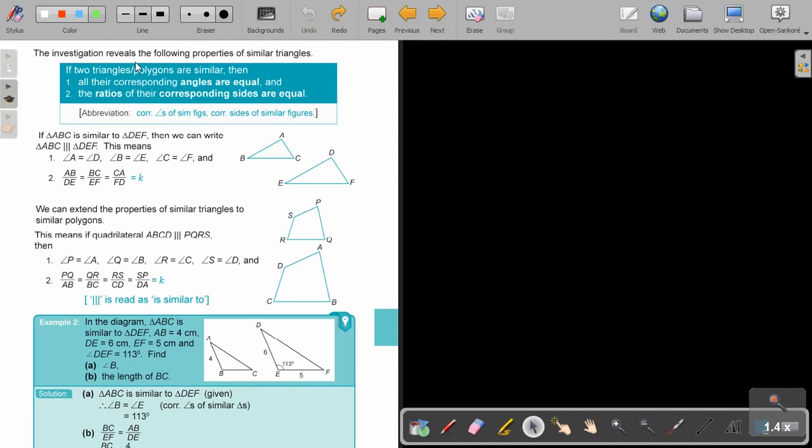The investigation reveals the following properties of similar triangles. If two triangles or polygons are similar, then all their corresponding angles are equal and the ratio of their corresponding sides are equal. So the sides are not equal. They are in a specific ratio.